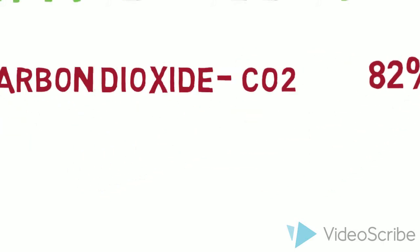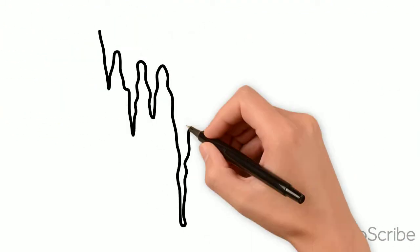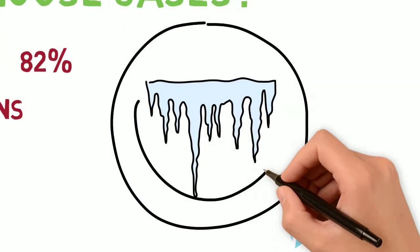One specific type of greenhouse gas is chlorofluorocarbons. These were used as refrigerants in aerosol propellants until, by international agreement, they were banned.